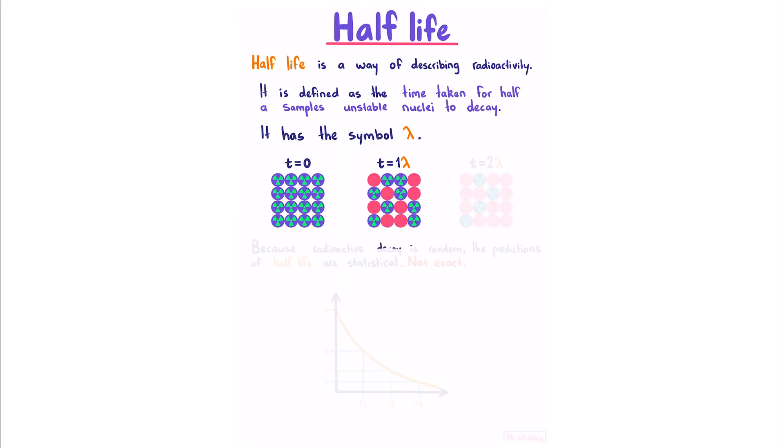And after two half-lives, roughly half of these. Because radioactive decay is random, the predictions of half-life are statistical, not exact. Plotting this on a graph, if we start at an amount of one, following one half-life, we're going to be at half. After a second half-life, we're going to be at a quarter. And after a third, we're going to be at an eighth.